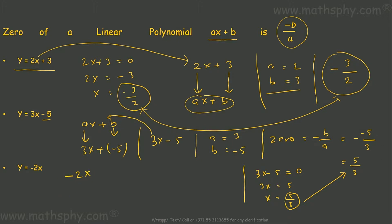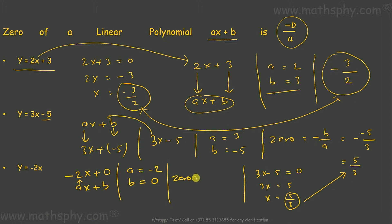Let's try for the polynomial minus 2x. Writing it as ax plus b, a is negative 2 and b is 0. The zero would be negative b over a, which is 0 over negative 2, which equals 0. So the zero of minus 2x is 0, confirming the formula works here too.